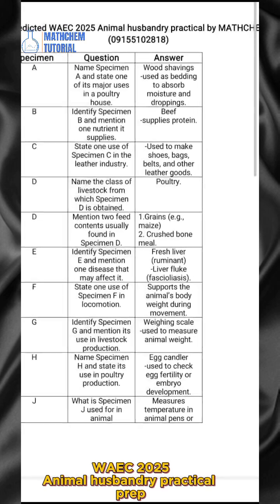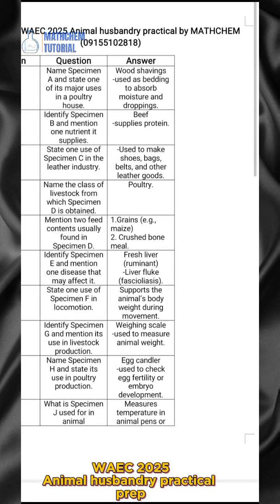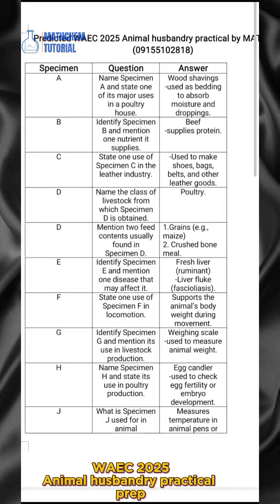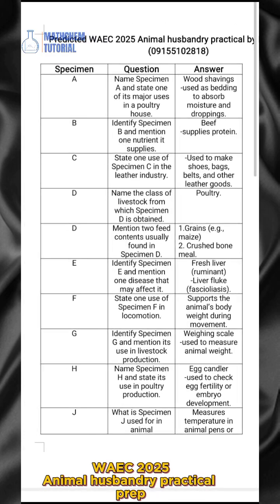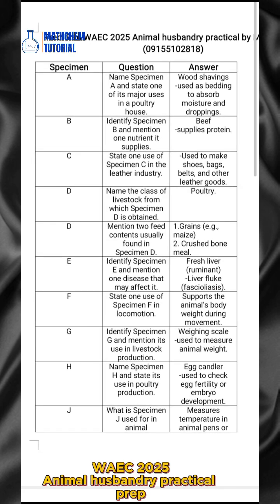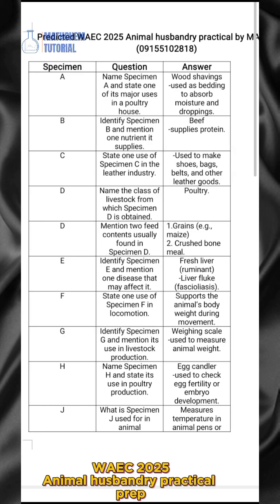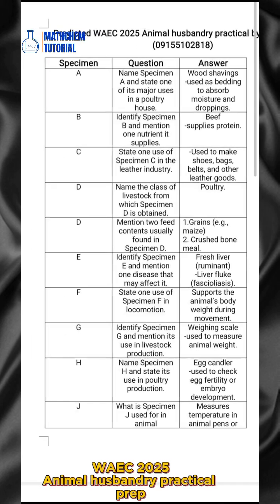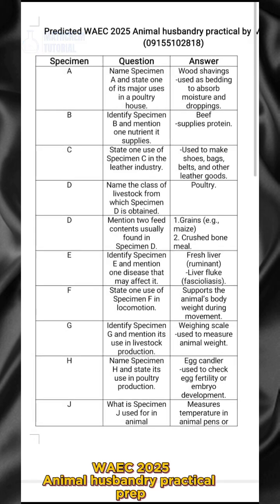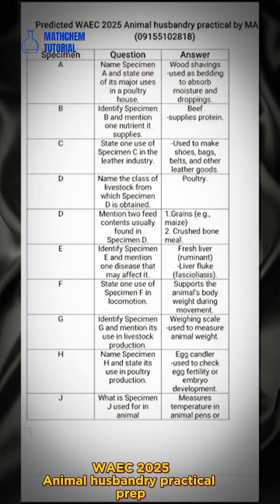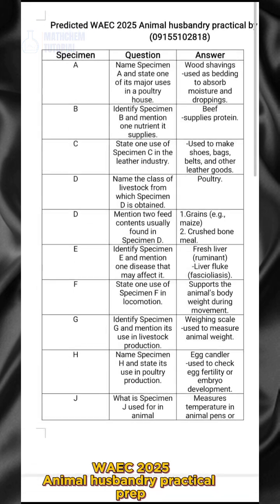This is predicted WAEG 25 animals boundary practical by Matt Kim. Here is my phone number — should you want to get in touch, send a DM or WhatsApp message to this number. Don't forget to share this to your classmates because it's going to help them together with whatever they are reading.